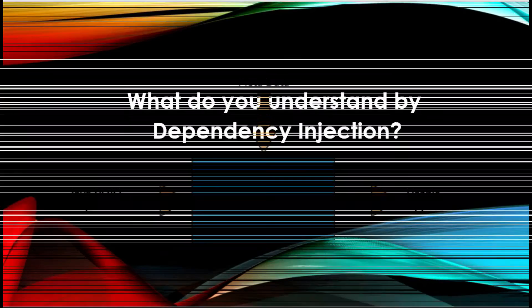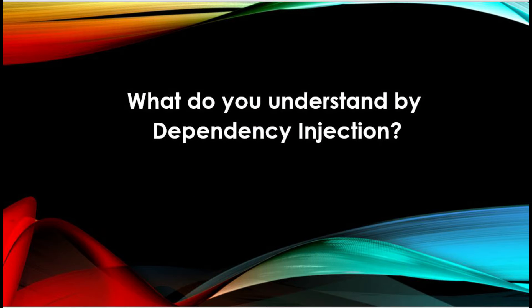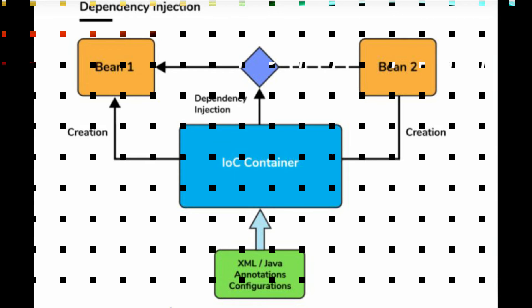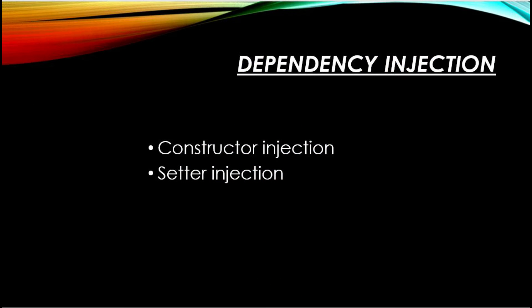What do you understand by dependency injection? The main idea in dependency injection is that you don't have to create your objects, but you just have to describe how they should be created. The components and services need not be connected by us in the code directly. We have to describe which services are needed by which components in the configuration file, and the IoC container in Spring will wire them up together. In Java, there are two major ways of achieving dependency injection: by constructor injection and setter injection.